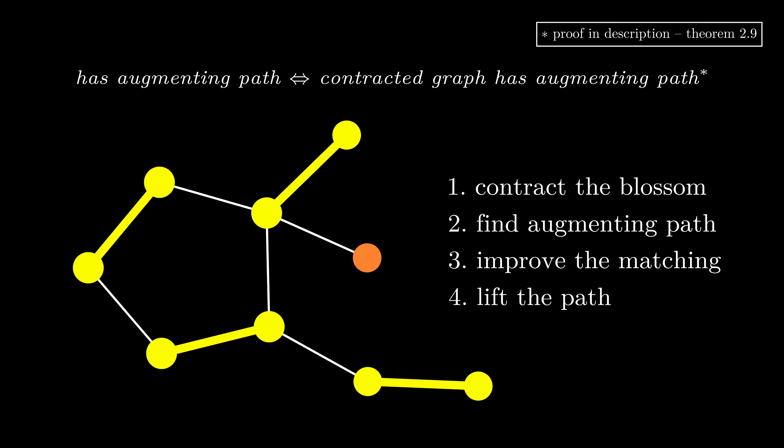Adding this operation to our algorithm will be pretty straightforward. Each time we add unmatched edges, we'll check for blossoms. If found, we'll contract the blossom, find the augmenting path in this new graph, and then lift back. The rest of the algorithm hasn't changed at all.